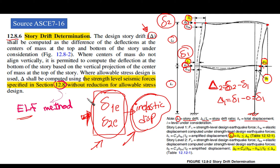The code states that the design story drift Δ shall be computed as the difference in deflections at the top and bottom of the story under consideration.